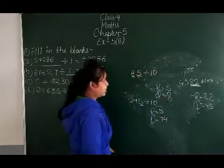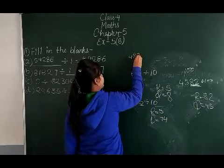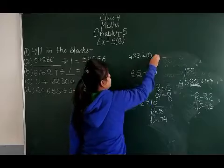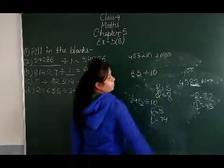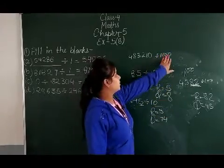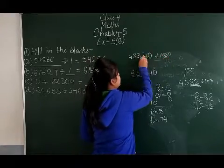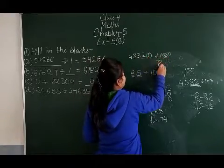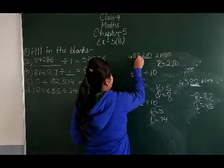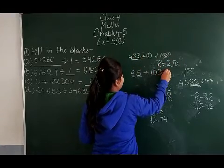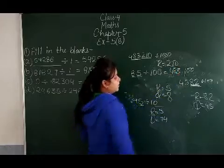Similarly for division by 1000: if I have the number 4,83,210 divided by 1000, there are 3 zeros in 1000, so the last 3 digits become the remainder, and the remaining digits become the quotient. For example, the quotient would be 483.